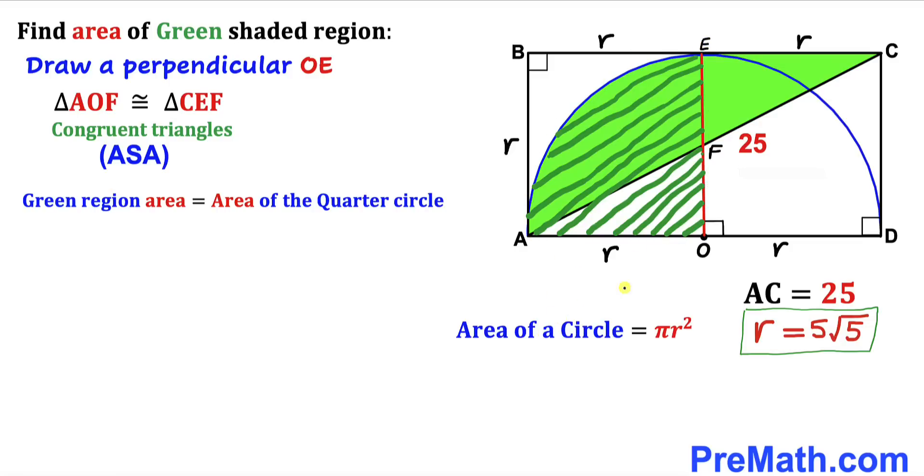Now let's recall the area of a circle formula. Area equals to πR² where our radius R is 5√5. Therefore the area for this quarter circle is going to be π(5√5)².